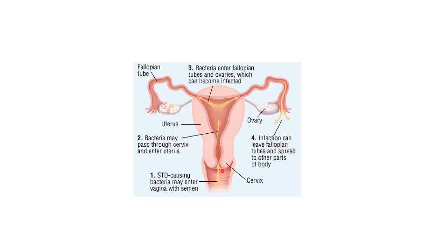This picture shows the pathogenesis of Pelvic Inflammatory Disease. Sexually transmitted disease-causing bacteria may enter the vagina with semen, then pass through the cervix and enter the uterus. The bacteria then enter the fallopian tubes and ovaries, which can become infected, and the infection can subsequently spread to other parts of the body.